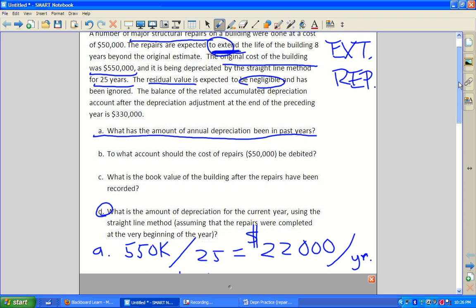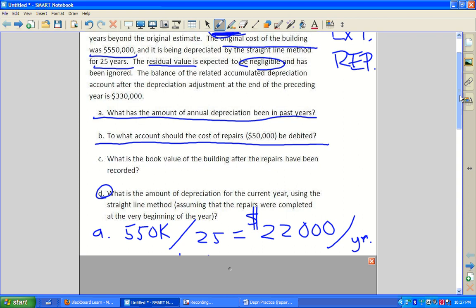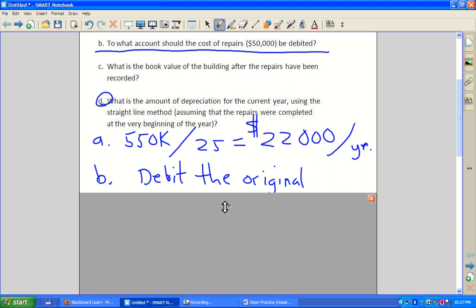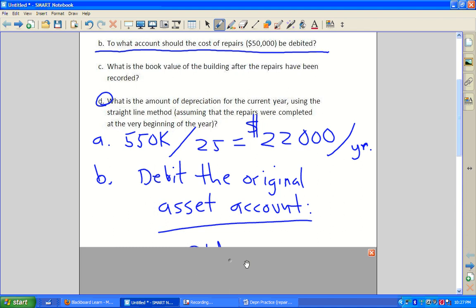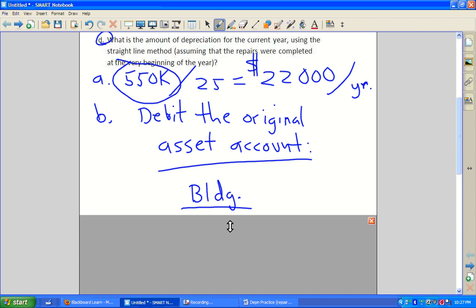Part B, to what account should the cost of the repairs be debited? Well, if you look in your book on page, I believe it's 337, it talks about extraordinary repairs, as we did in the lecture. And you could do it either way. You can actually debit the actual asset account. Some accountants like to debit the accumulated depreciation account. Either way, the effect is the same, so it doesn't really matter. So the original asset account was building. That's the asset we're talking about here. So you would simply add the cost of those repairs to building. The original cost was $550,000. And so what's going to happen later is you are going to add whatever the cost was, $50,000 to that.